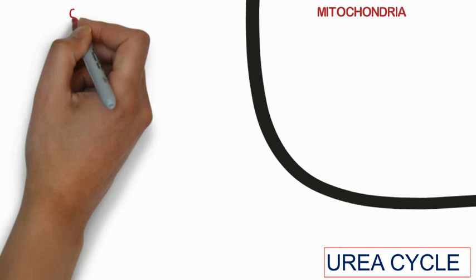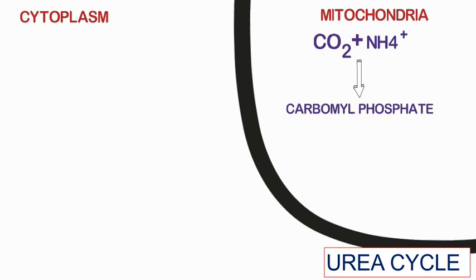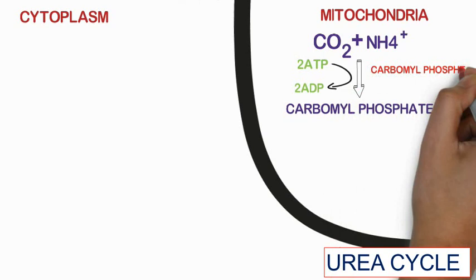Free ammonia combines with carbon dioxide and produces carbamyl phosphate. In this process, 2 ATP are used and 2 ADP molecules are produced. The enzyme required is carbamyl phosphate synthase 1.